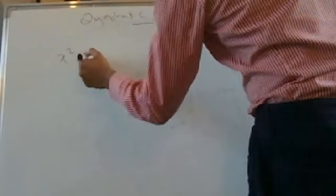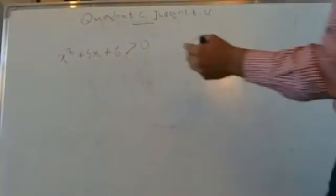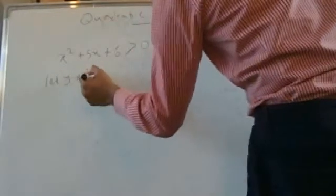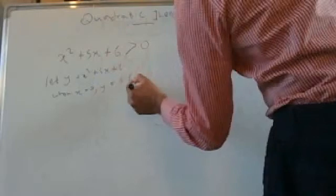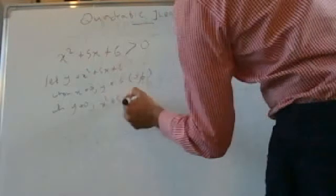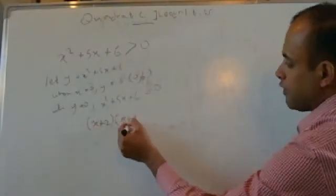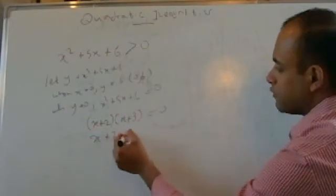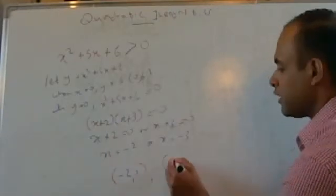So let's say we have x squared plus 5x plus 6 is greater than 0 this time. You start off the same way: let y equals x squared plus 5x plus 6. When x equals 0, y equals 6, giving the point (0, 6). When y equals 0, factorizing gives (x plus 2)(x plus 3) equals 0. So x equals minus 2 or x equals minus 3, giving the coordinates (−2, 0) and (−3, 0). We now have three coordinates to work with.